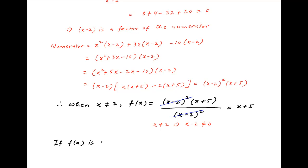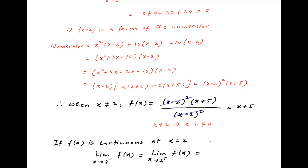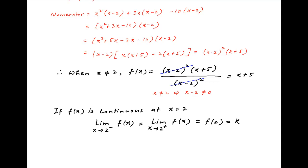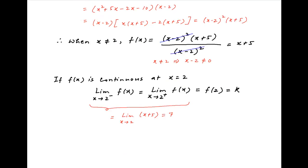Now if f(x) is to be continuous at x equal to 2, then the limit of f(x) as x tends to 2 from the negative side should equal the limit of f(x) as x tends to 2 from the positive side, and this should equal f(2), which is given to be k. When x is tending to 2 from either side, x is not equal to 2, so the limit equals the limit of (x + 5) as x tends to 2, which is equal to 7. Therefore, k should be equal to 7 for f(x) to be continuous at x equal to 2.